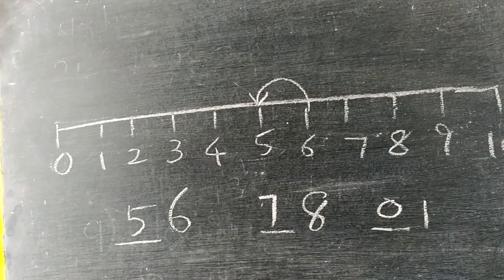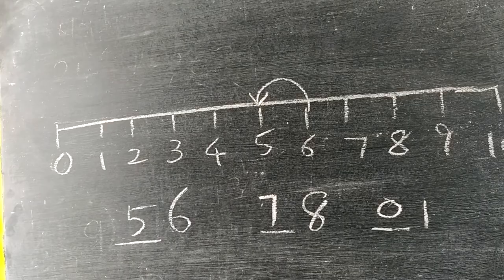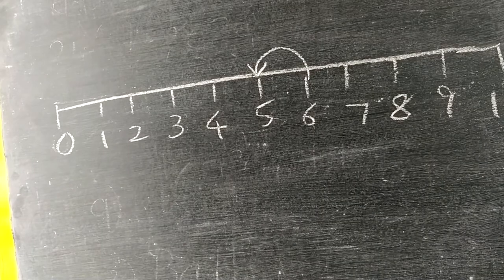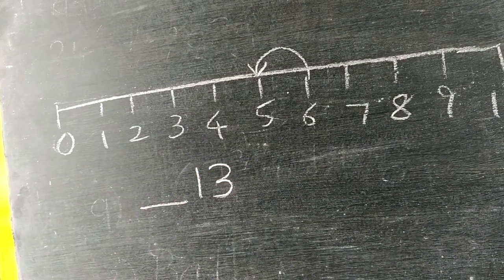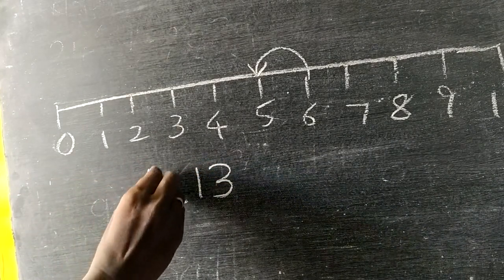So before means the number just comes before. We cannot draw number line all the time. Now tell me before 13 what comes. Think, before 13 what will come? 12.